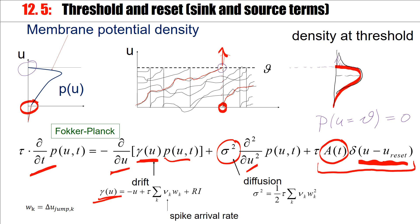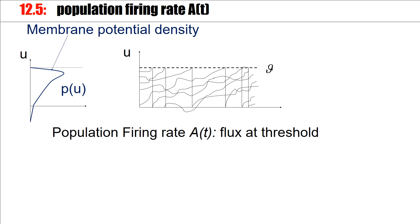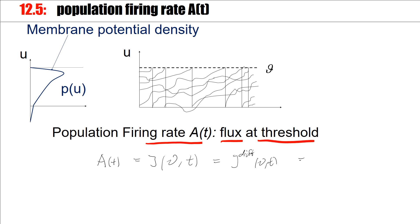We have calculated the drift term gamma of U and also the diffusion term. Now let's continue to work on this in view of the condition that the density at threshold is zero. The question we would like to ask is: what is the quantity A of t — what is the population activity? The population firing rate or population activity A of t corresponds to the flux at threshold. The population activity is therefore J at U equal theta, and J the flux has two components: the drift component and the jump component.